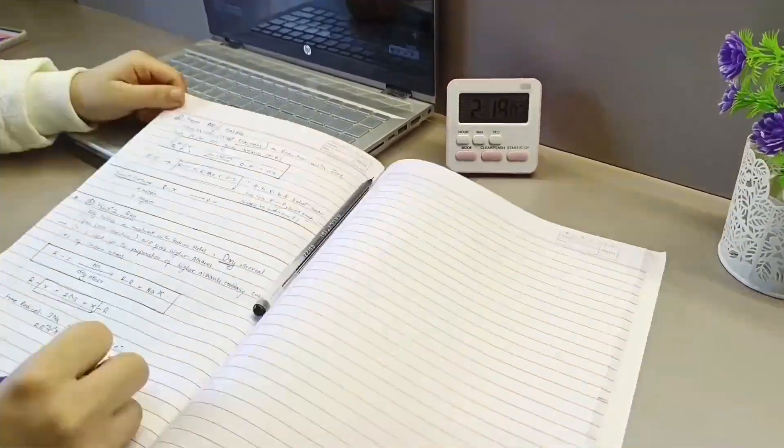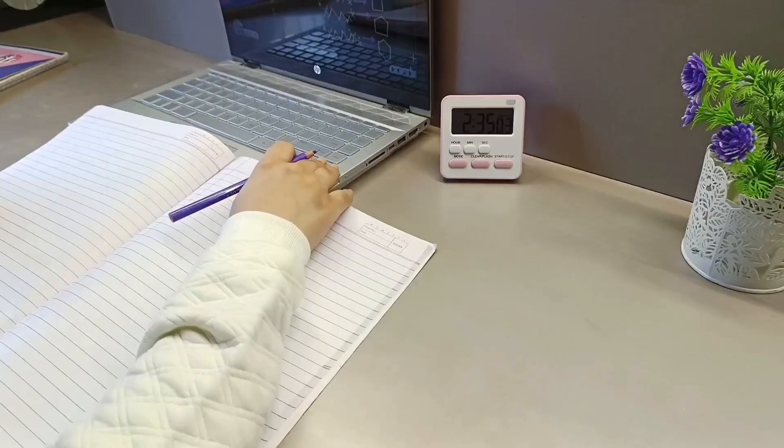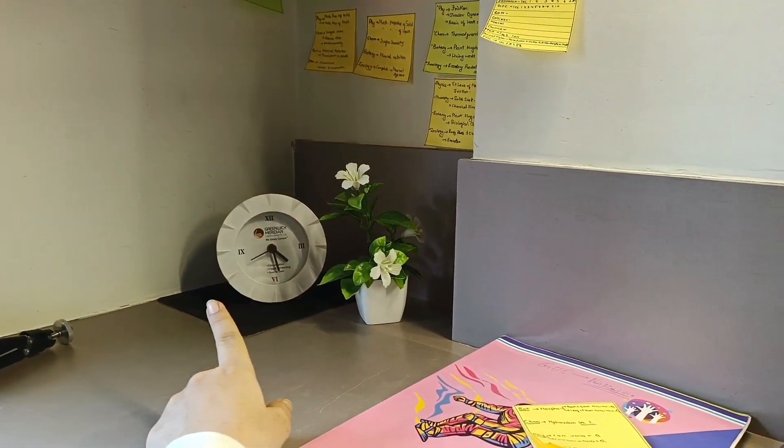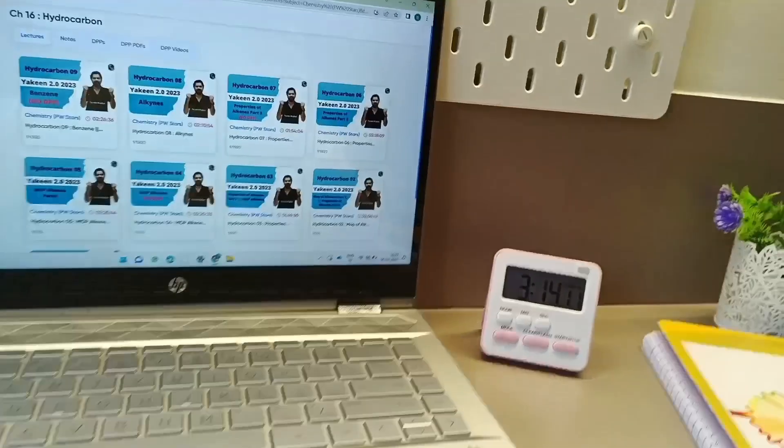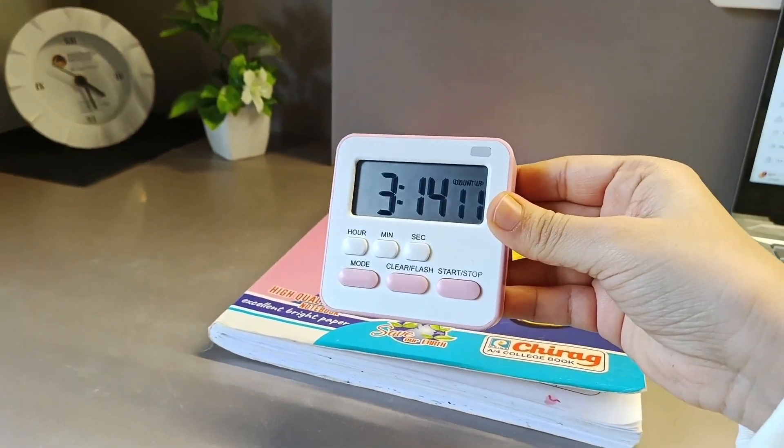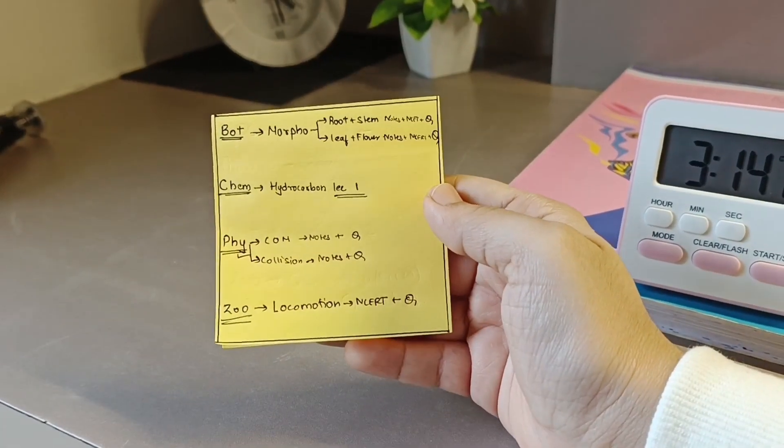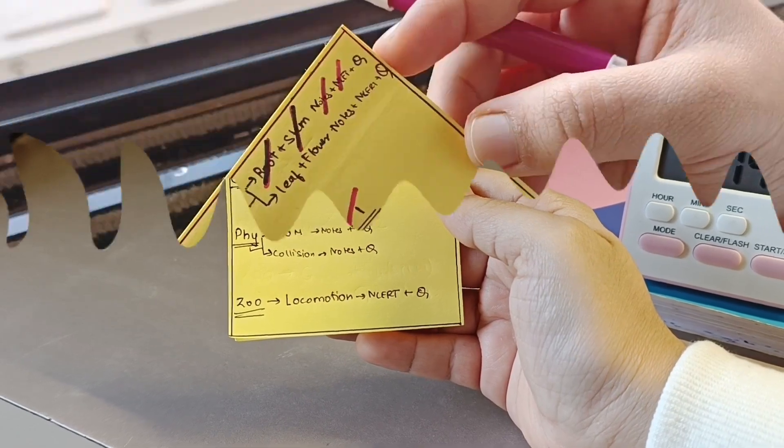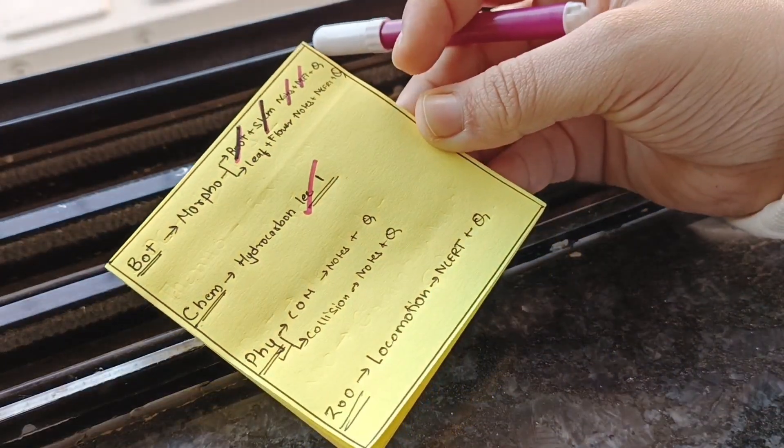And then it was finally completed. So it's 4:30 right now and I have completed the lecture. It's about 3 hours 14 minutes of study done. This is the to-do list, so let's mark what I have done. Okay, so after botany and chemistry, let's move to zoology.